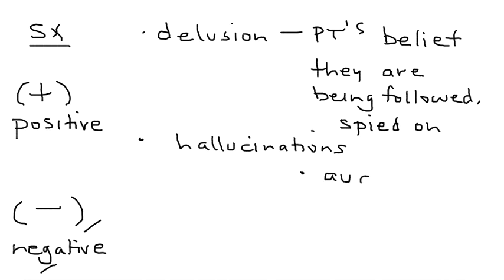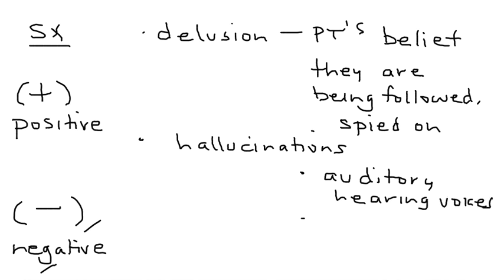The next type of positive symptom prevalent in schizophrenia is hallucinations. Hallucinations are most commonly auditory — meaning someone is hearing voices — and sometimes they can also be visual, meaning seeing things.